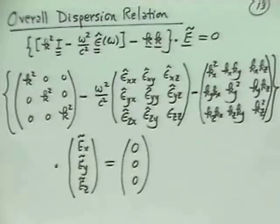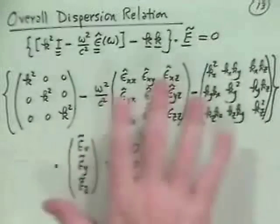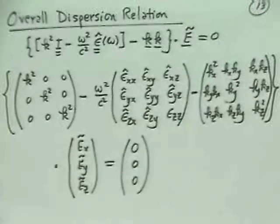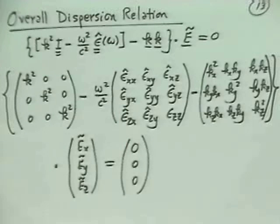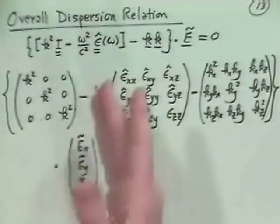We shouldn't let that intimidate us. What we're going to do next time is not do the general case — as you can imagine, the general case is a little bit complicated — but we'll take some specific cases. We'll consider waves perpendicular to B, parallel to B, extraordinary modes, ordinary modes where E is parallel to B or not, electrostatic plasma oscillations, lower and upper hybrid frequencies, Whistler waves, and various other types of waves. So we'll put all this together into some specific cases next time.